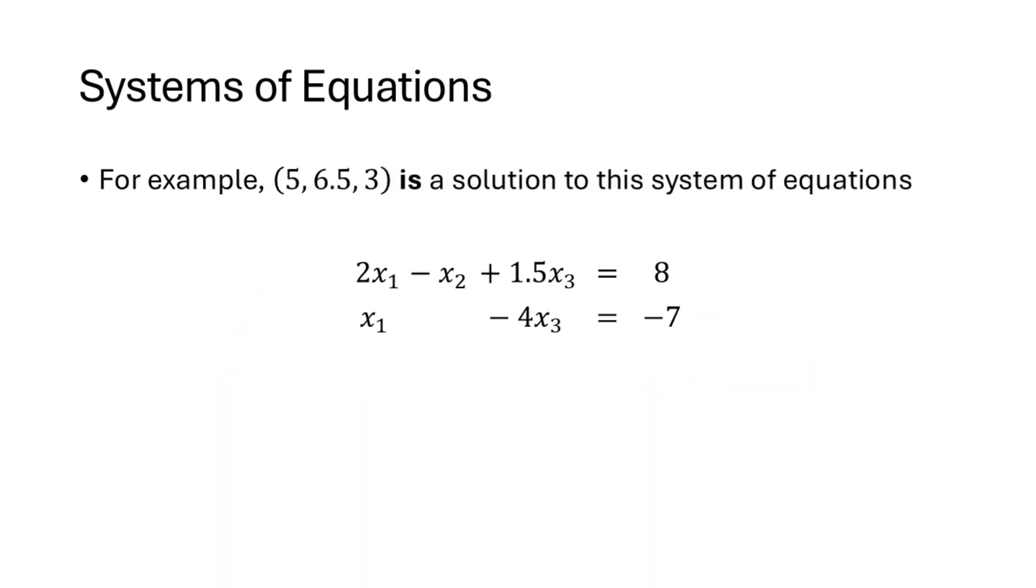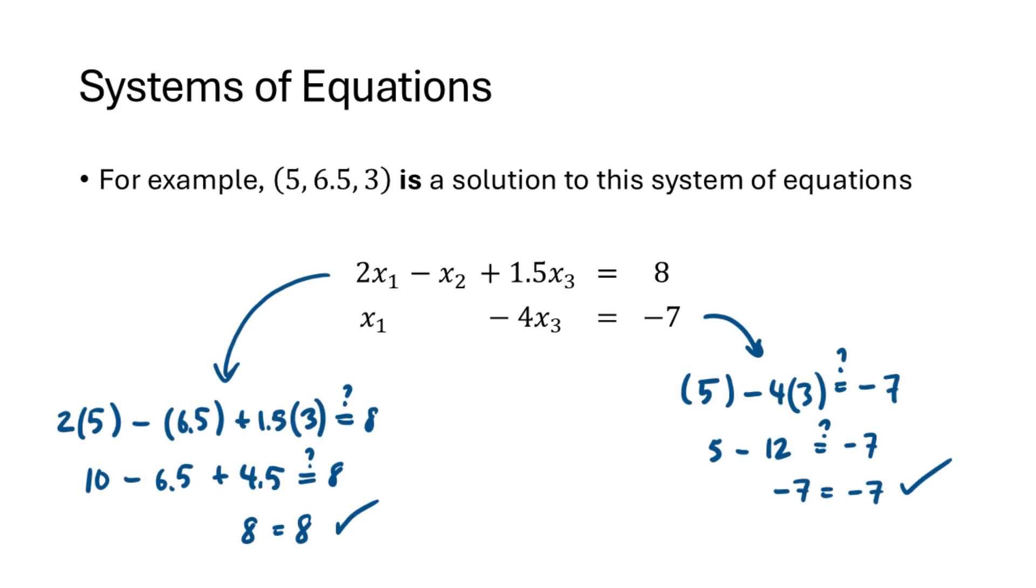Now on the other hand, the ordered triple 5, 6.5, 3 is a solution of this system of equations, and again we can verify that by checking. We plug the values into both equations, and only once we verify that the values make both equations true, can we confidently say that this is a solution of this system of equations.